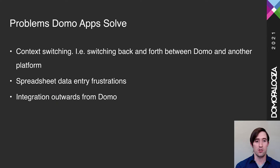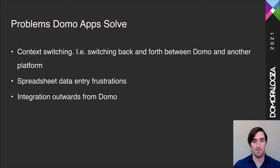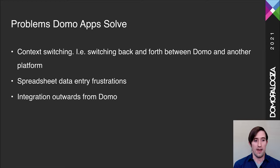Each site has a site manager that is somewhere between part-time and full-time depending on the location, and they are assigned a mobile device. That mobile device is the only device they use for all their data entry. At a high level, Domo apps solve problems like context switching — the constant switching between Domo and some other place you might be entering data — data entry frustrations especially related to spreadsheets, and integrating your business with the Domo platform by making use of data already in Domo and connecting to other system software.